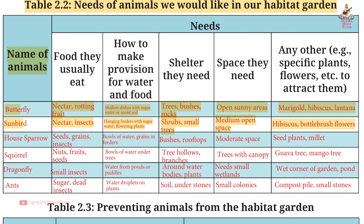House Sparrow: Food — Seeds, Grains, Insects. Water/food provision — Bowls of water, grains in feeders. Shelter — Bushes, rooftops. Space — Moderate space. Other — Seed plants, Millet. Squirrel: Food — Nuts, Fruits.